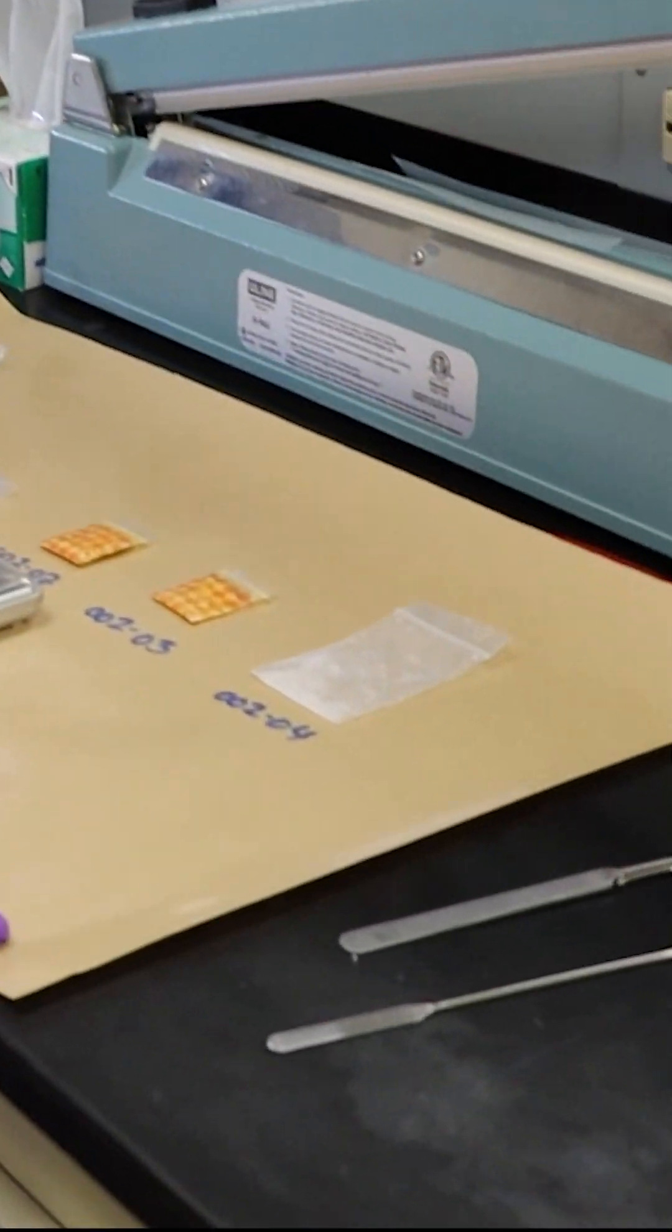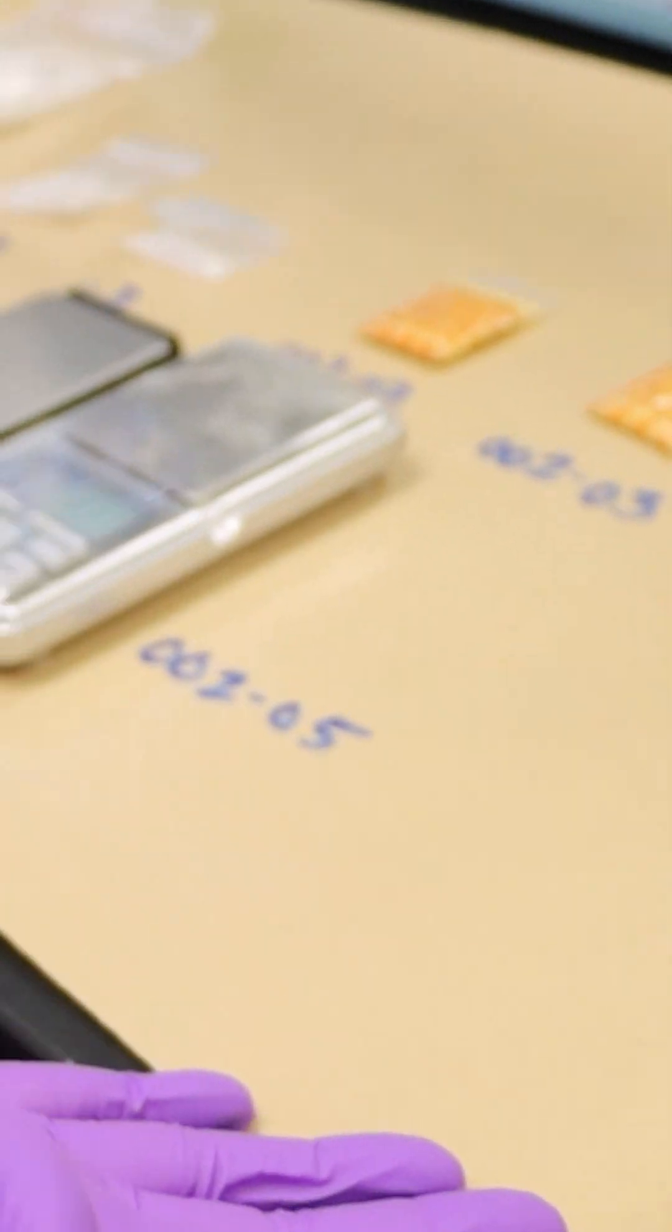This is an example of the evidence that we would have. I've numbered the evidence. I'm going to take a weigh boat and zero it out.